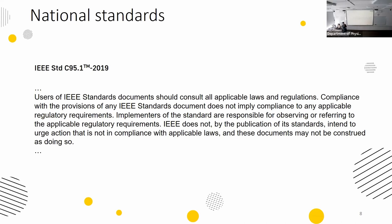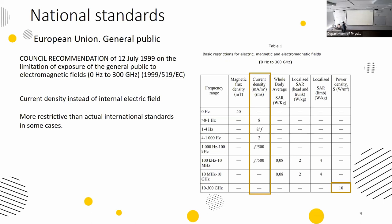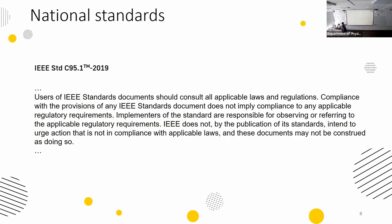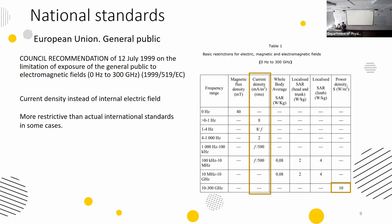I want to mention some interesting cases. For example, in the European Union, they have a standard for the general public that was published in 1999, so it is not up to date with today's international standards. For basic restrictions, it uses the quantity of current density, which is not the case in modern international standards. I hope they will update it soon, as international standards have already been updated years ago, but they have not yet.